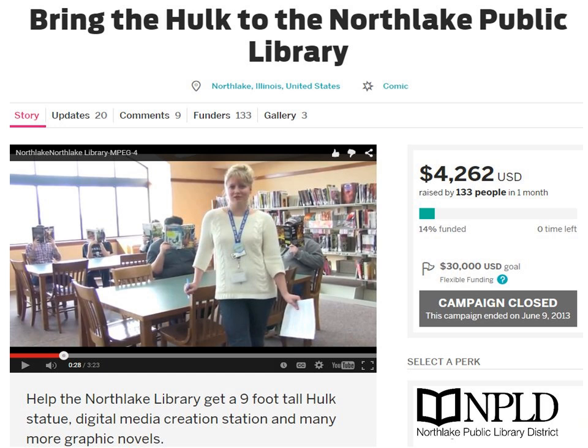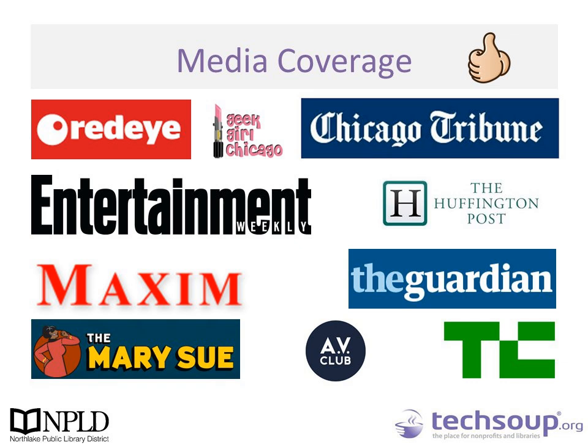We really wanted to add a tech component to the project, so we brought it to our director who liked the idea and asked us to present to the rest of our board. Our pitch: help the Northlake Public Library get a 9-foot tall Incredible Hulk statue, graphic novels, and a creation station featuring an iMac loaded with Adobe Creative Suite (which we actually got from TechSoup), a Syntec drawing tablet, a 3D printer, and a light box. All in all, we asked for $30,000. We raised a little over $4,000 on our Indiegogo page and another $1,350 in-house — $5,600 total in one month.